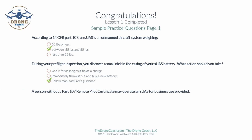Question: A person without a Part 107 remote pilot certificate may operate an unmanned aircraft for commercial business use, providing — is it: a visual observer is present, you have a waiver from the FAA, or the person is under the direct supervision of the remote pilot in command? The answer is: the person is under the direct supervision of the remote pilot in command.